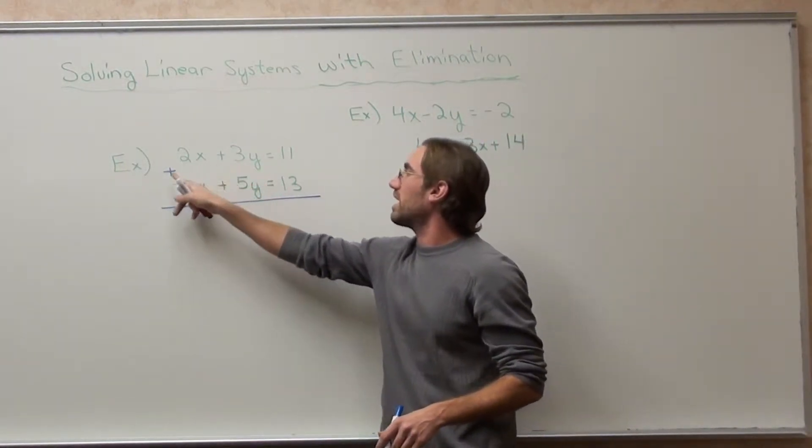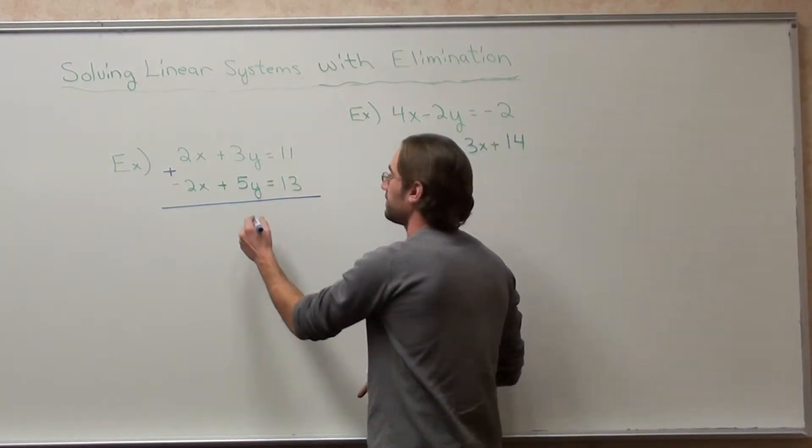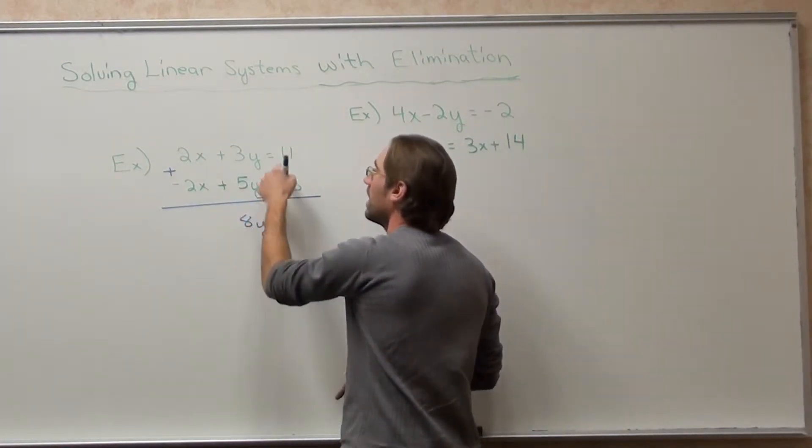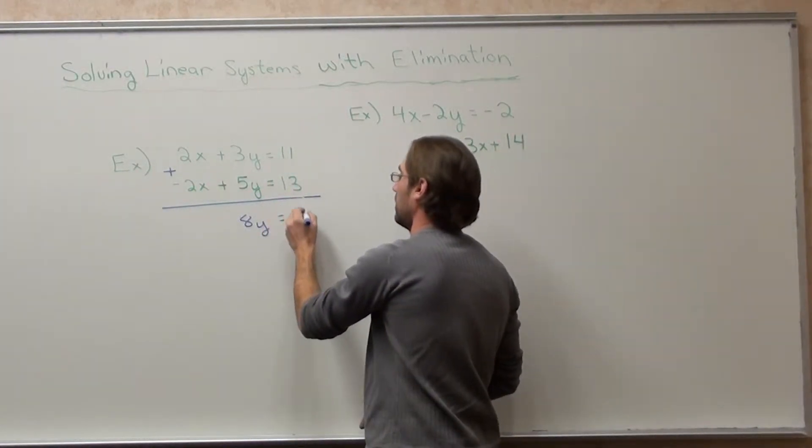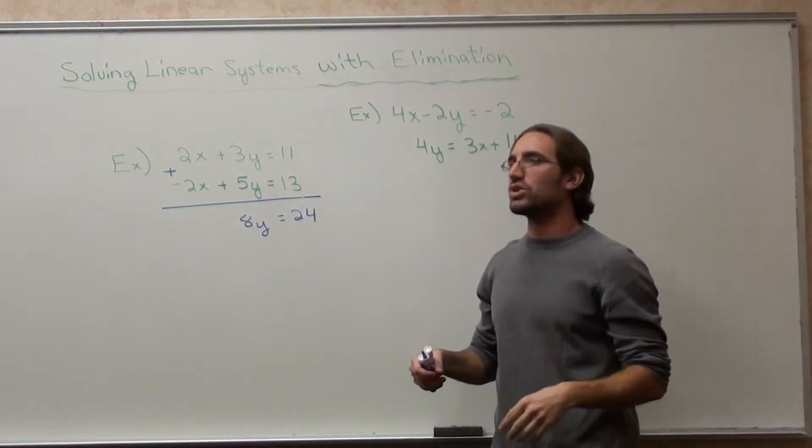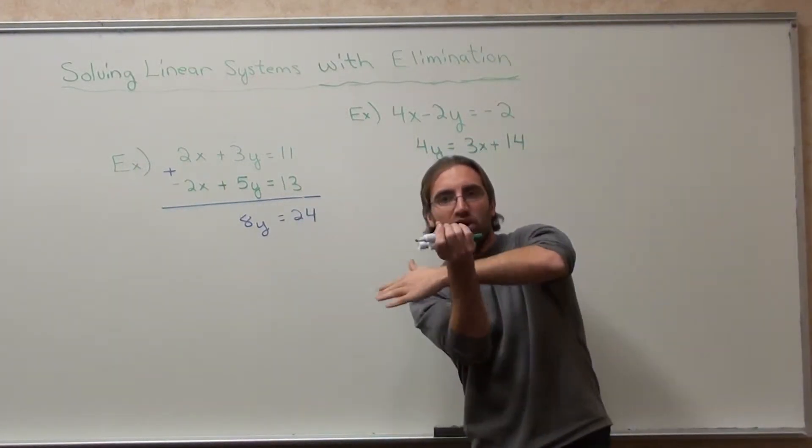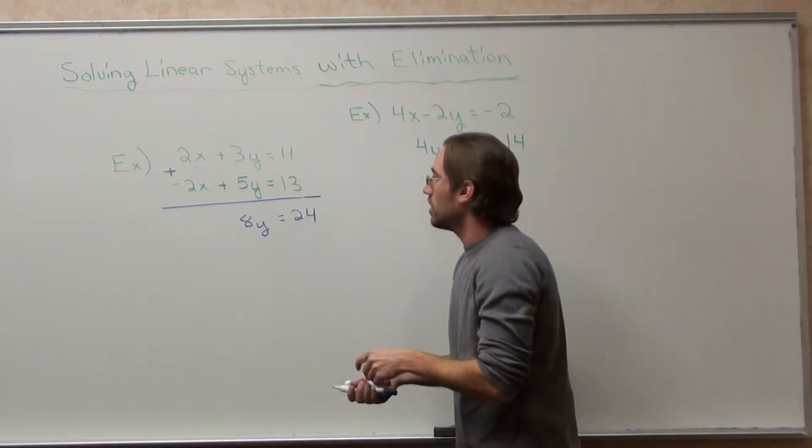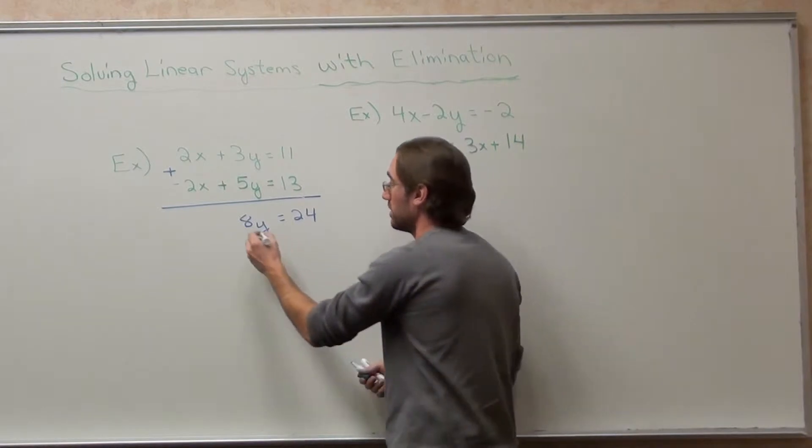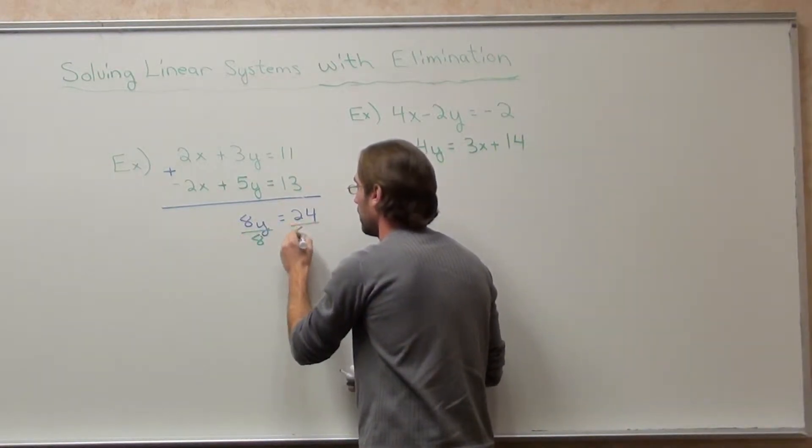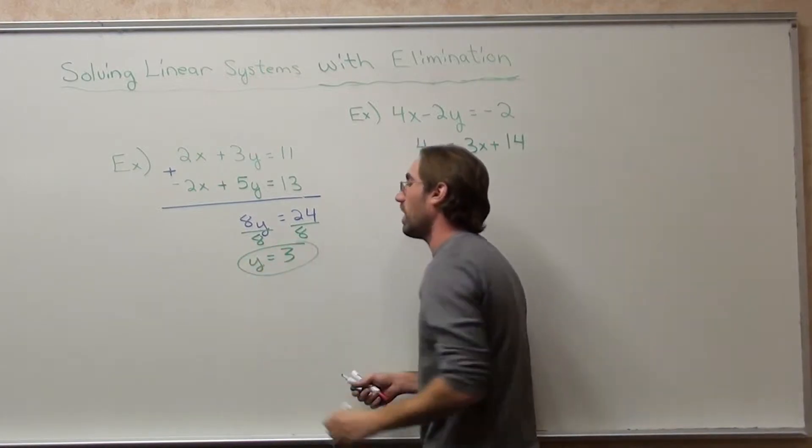Now I say 3y plus positive 5y is 8y. And 11 plus 13 is 24. Again what we're doing is we're finding out where these two graphs cross. When we figure out our x and y value that's where they cross on the x and y axis. So 8 times y equals 24. I'm going to divide by 8 on both sides. Y equals 3.